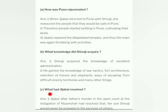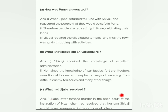Question C: what had Jizabai resolved? — Jizabai ne kaun si pratigya li, unhone kya thraav paarit kiya? Jizabai, after her father's murder in the open court at the instigation of Nizam Shah, had resolved that her son Shivaji would never be engaged in the service of others. She wanted Shivaji to establish the rule of his own people through Swaraj.